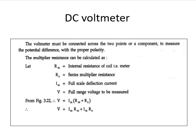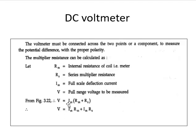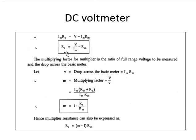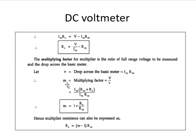To summarize the DC voltmeter derivation: V = I_M × R_M + I_M × R_S. We rearrange to find R_S = V / I_M − R_M. The multiplying factor m = V / v = 1 + R_S / R_M, and R_S = (M − 1) × R_M. Use this formula to calculate R_S for any given numerical.